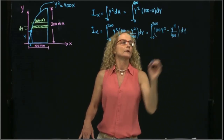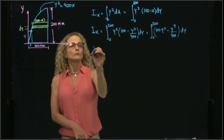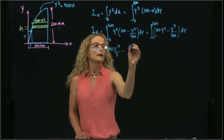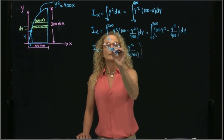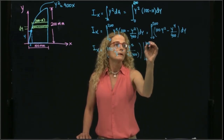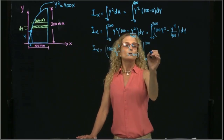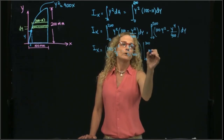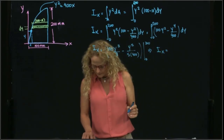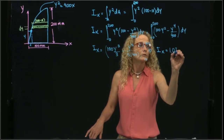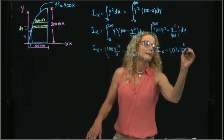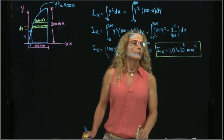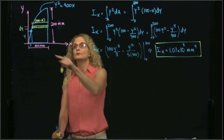Integrating gives 100y cubed over 3 minus y to the fifth over (5 times 400), all evaluated from 0 to 200 millimeters. Plugging in 200 and 200 to the fifth, then subtracting 0, gives the result: 1.07 times 10 to the eighth millimeters to the fourth. That is the area moment of inertia with respect to the x-axis.